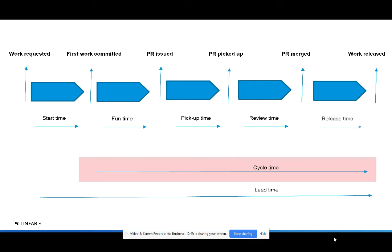After the branch has been merged, the time it takes for it to get released, we call release time. Merge time is another important indicator, especially for some organizations that have continuous deployment — their merge time is effectively their cycle time.